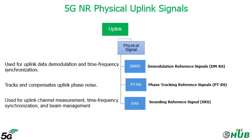Regarding the physical uplink signals, we have three: Demodulation Reference Signal, Phase Tracking Reference Signal, and Sounding Reference Signal. DMRS, or Demodulation Reference Signal, is used to estimate the radio channel for demodulation. It is user equipment specific and can be configured to be transmitted only when necessary. In both downlink and uplink, it is designed to take into account early decoding requirements to support low-latency applications.